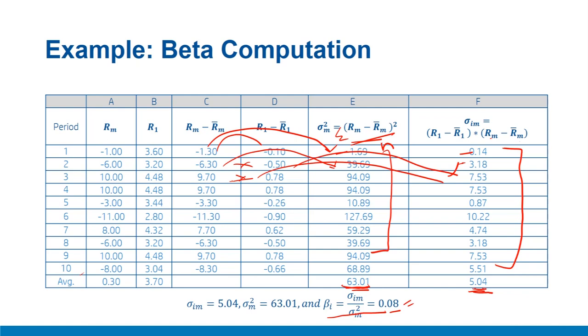To summarize: beta is the sensitivity of a security to market movements and an important measure of a security's risk. It represents the security's contribution to portfolio risk and can be calculated by regressing security returns on market returns — the slope coefficient on the market variable is beta. Mathematically, beta = covariance(security, market) / variance(market). For a portfolio with a large number of securities, only systematic or market risk is relevant; idiosyncratic stock-specific risk is eliminated through diversification.